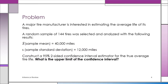Here's our first problem. A major tire manufacturer is interested in estimating the average life of its tires — we want to estimate mu. We take a random sample of 144 tires. The sample mean x-bar was 40,000 miles, and the sample standard deviation s was 12,000 miles. We're asked to construct a 95% two-sided confidence interval estimator for the true average tire life, mu.